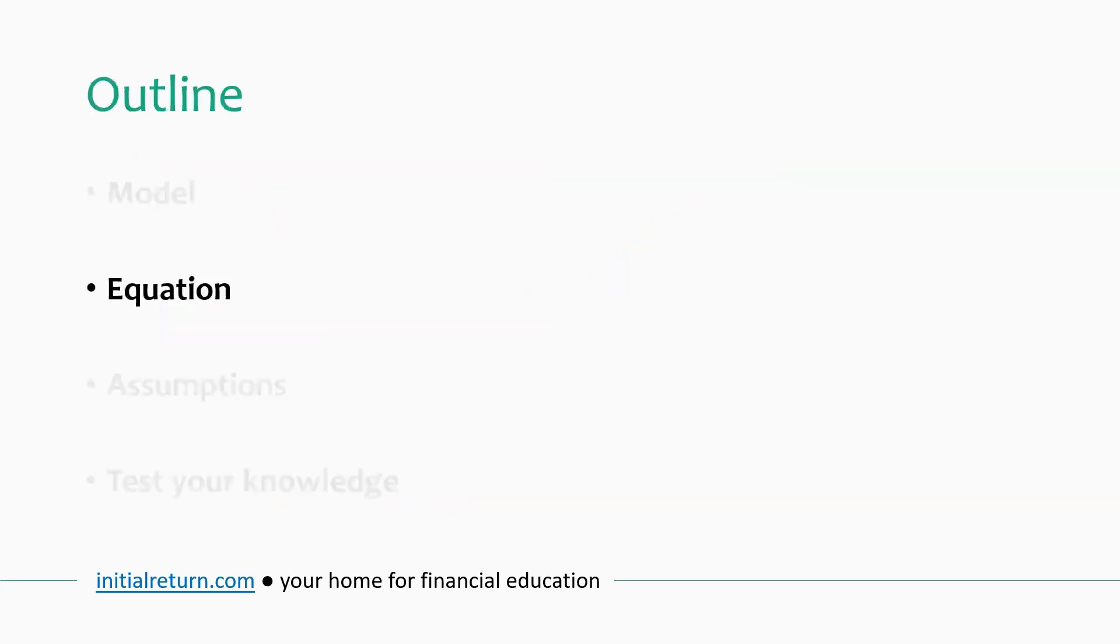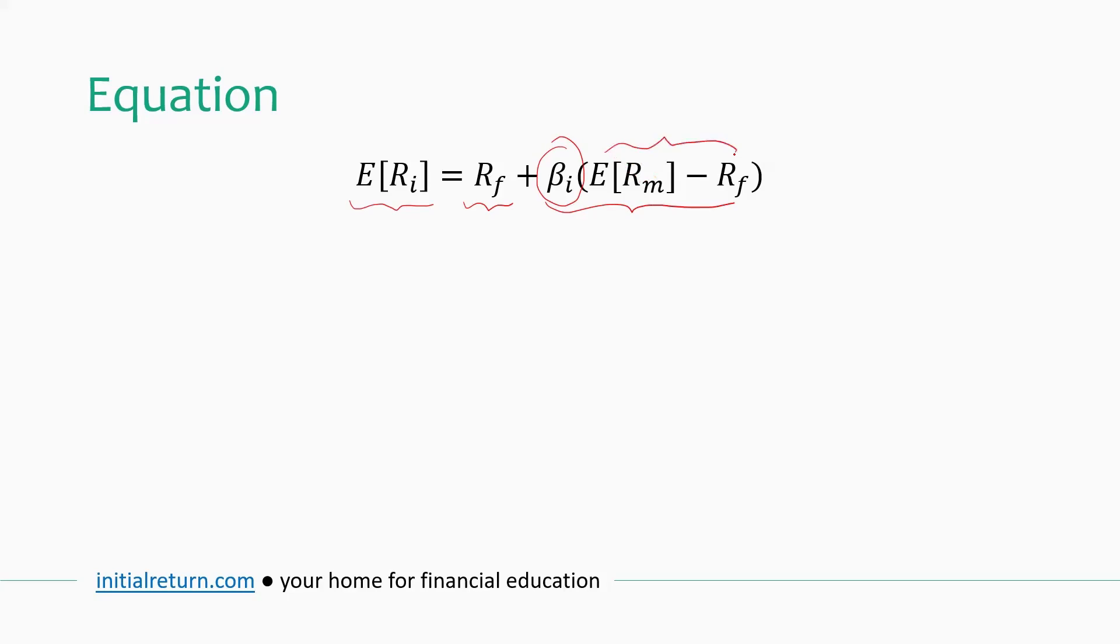So according to CAPM, a stock's expected return will have two components. So it will depend on the risk-free rate, and it will involve a premium, a risk premium. And this risk premium will depend on the stock's beta, and what is called the market risk premium. So this is called the market risk premium.